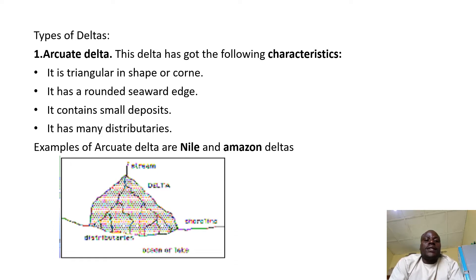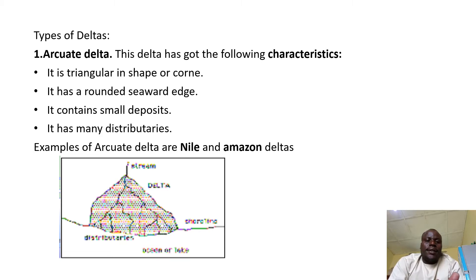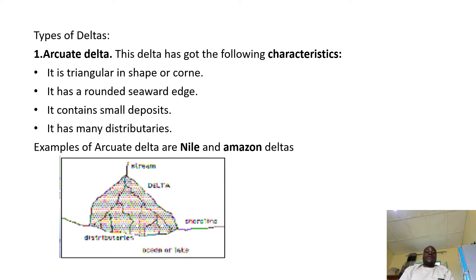We have arcuate deltas, and before we look at all, I think the shape of each delta will help you to understand faster. The arcuate delta is a delta which has got the following characteristics. We shall base on characteristics to understand the difference between one delta and another. This delta is triangular in shape, or it's cone-like.